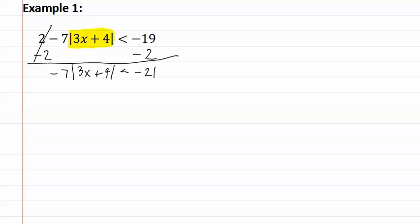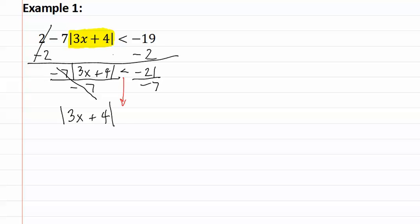Also, I could not combine the two with the negative seven in the first step because those are not like terms. Let's continue. We divide each side by negative seven. This gives us the absolute value of 3x plus four. Remember, since I divided by a negative, we need to flip the sign, so it is greater than three. We have now isolated the absolute value, so we can determine whether this is an and or an or. Since it is greater than, we call this an or statement.